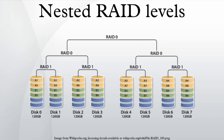RAID 50 combines the straight block-level striping of RAID 0 with the distributed parity of RAID 5. This is a RAID 0 array striped across RAID 5 elements, and it requires at least six drives. An example shows three collections of 120 GB RAID 5 arrays striped together to make 720 GB of total storage space.